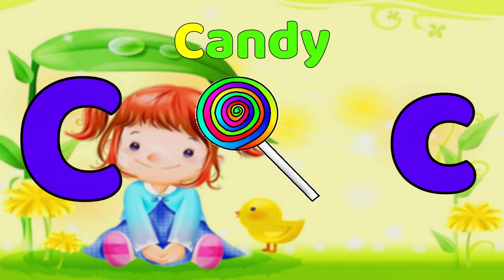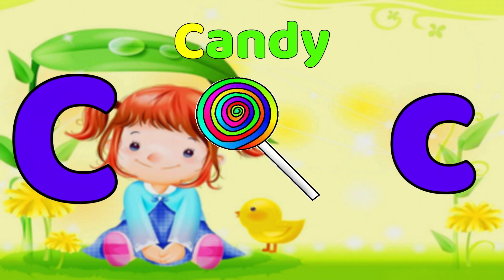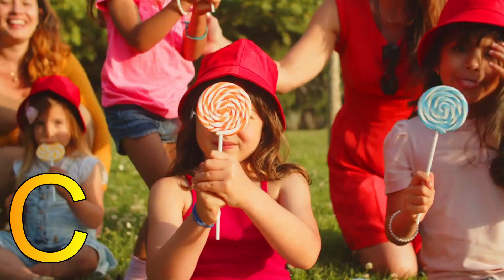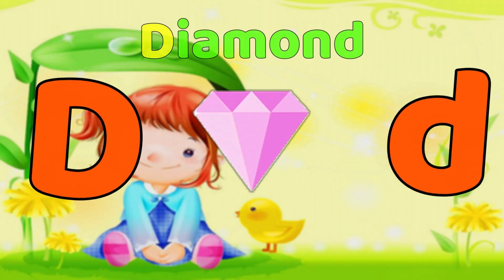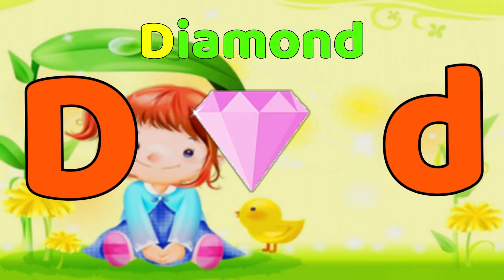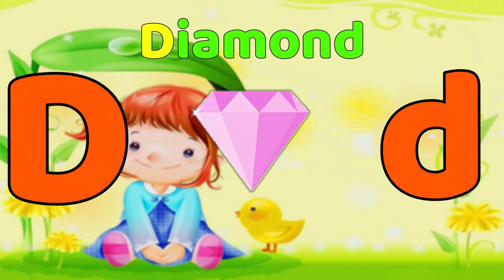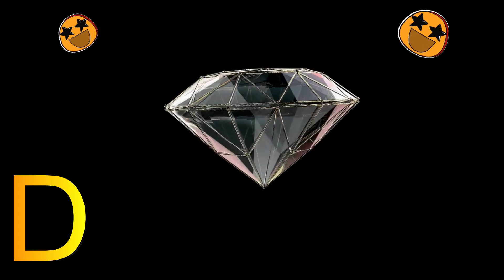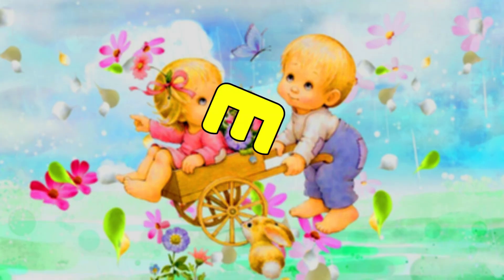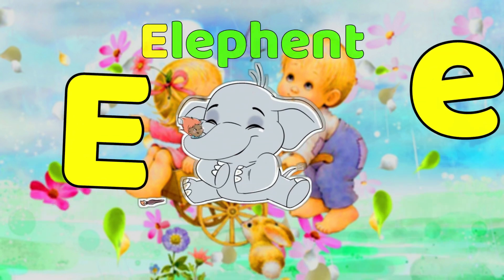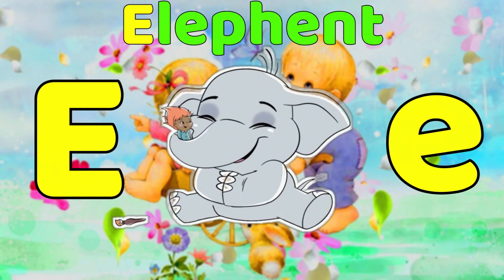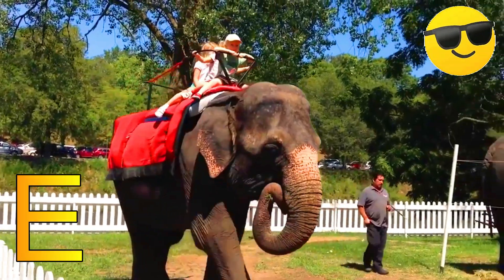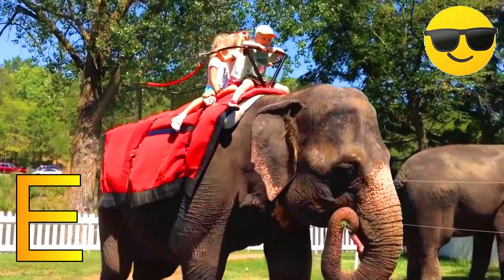C, C, Candy. C, Candy. D is for Diamond. D, D, Diamond. D, D, Diamond. D, Diamond. E is for Elephant. E, E, Elephant. E, E, Elephant. E, Elephant.